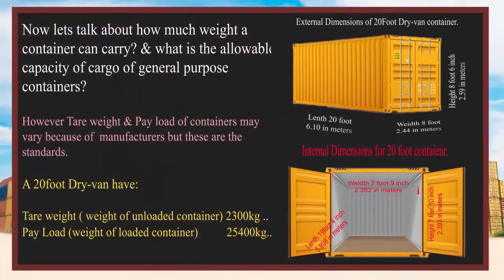Now let's talk about how much weight a container can carry, and what is the allowable cargo capacity of general purpose containers. Tare weight and payload of containers may vary by manufacturer, but given standard values, a 20 foot dry van has a tare weight of 2,300 kg — which is the weight of the empty container — and a payload of 25,400 kg, which is the maximum weight of loaded cargo.